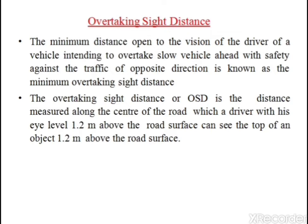Overtaking sight distance (OSD) is the minimum distance open to the vision of a driver intending to overtake a slow-moving vehicle ahead, with safety against traffic from the opposite direction. OSD is the distance measured along the center of the road where a driver with eye level 1.2 meters above road surface can see the top of an object 1.2 meters above the road surface. It is the minimum distance provided for a fast-moving vehicle to safely overtake a slow-moving vehicle considering oncoming traffic.